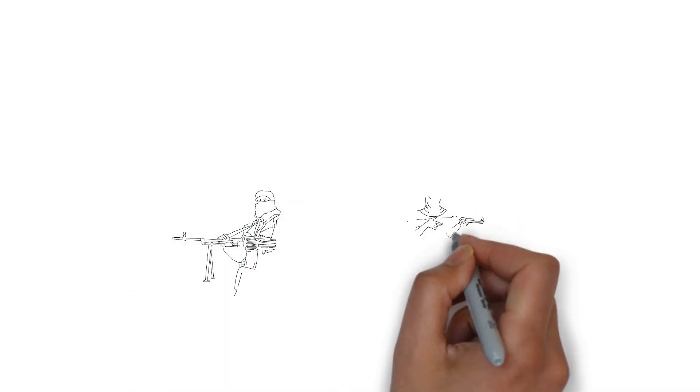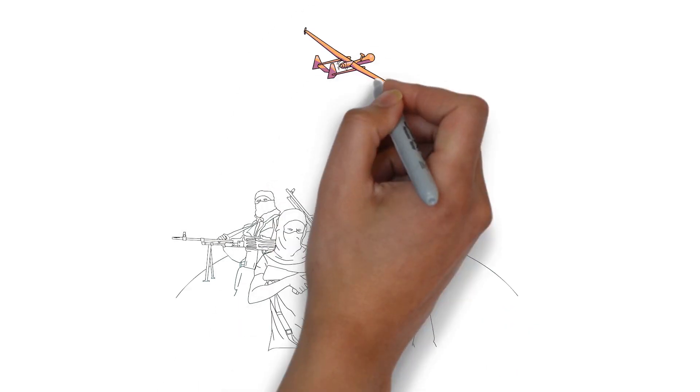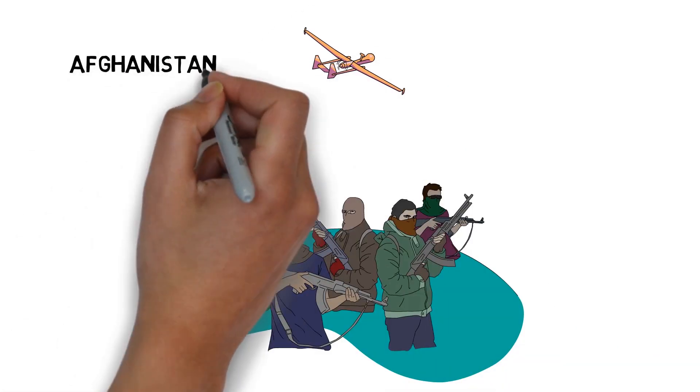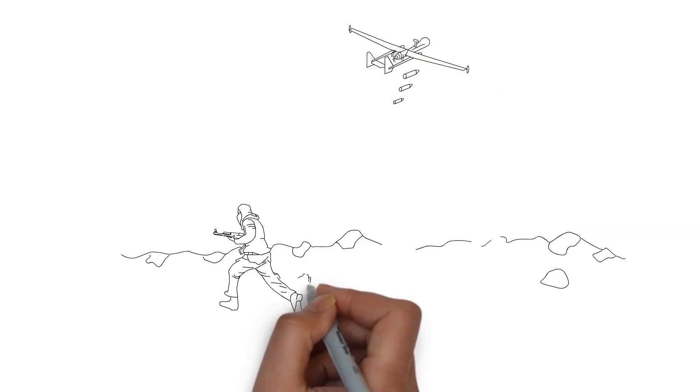In the war on terror, the U.S. increasingly uses drones to target terrorists, particularly in Afghanistan, Libya, Pakistan, Somalia, and Yemen. However, the effectiveness of drone strikes is highly debated.